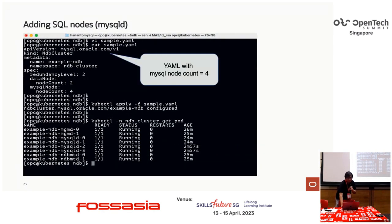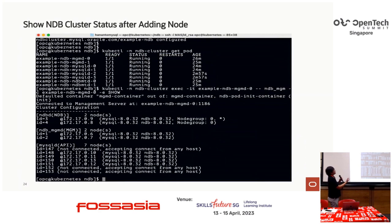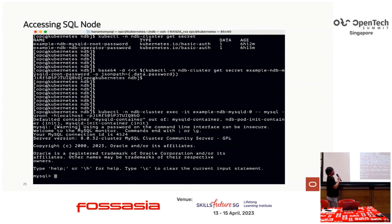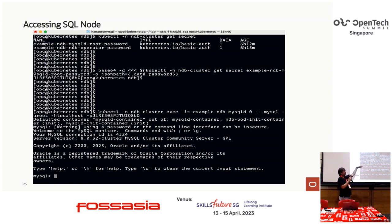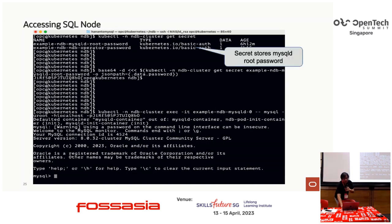Adding SQL nodes is quite simple — just edit the YAML file from two to four and execute kubectl apply. Immediately additional SQL nodes come up running. After adding nodes, checking status shows four SQL nodes — two additional SQL nodes added. To access the SQL nodes, the NDB operator creates a secret to store the password. Use base64 -d to decode the secret and retrieve the password, then log into one of the SQL nodes using that password.